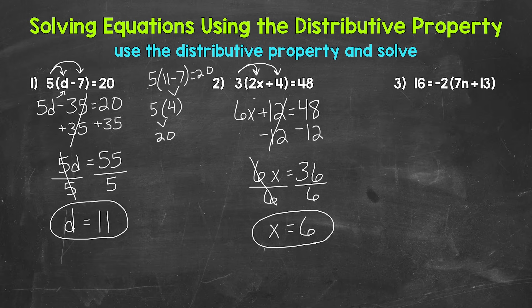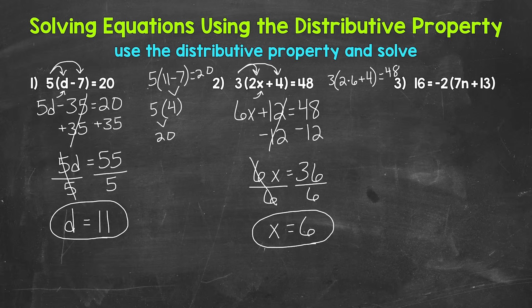Let's check this by plugging 6 in for x. We have 3 times (2 times 6 plus 4) equals 48. In parentheses, 2 times 6 is 12, plus 4 is 16. Then 3 times 16 is 48. So we are correct. x equals 6.